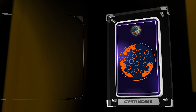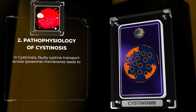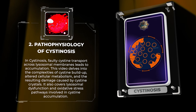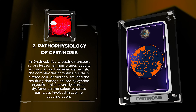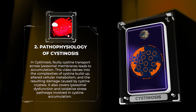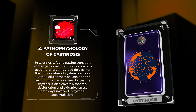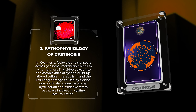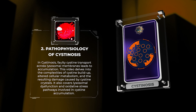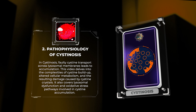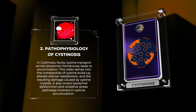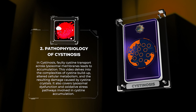In Cystenosis, faulty cysteine transport across lysosomal membranes leads to accumulation. This video delves into the complexities of cysteine buildup, altered cellular metabolism, and the resulting damage caused by cysteine crystals. It also covers lysosomal dysfunction and oxidative stress pathways involved in cysteine accumulation.